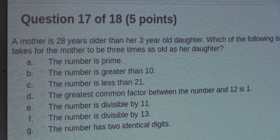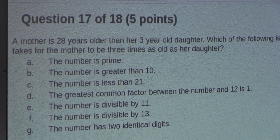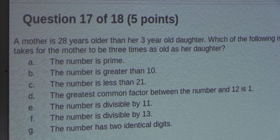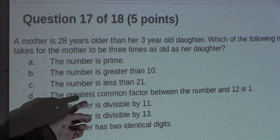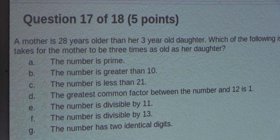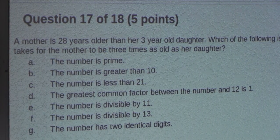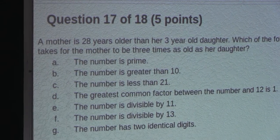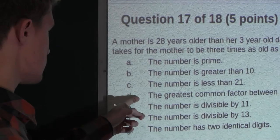Option C, the number is less than 21. Well, that's also true, because 21 is greater than 11. Now, D, the greatest common factor between the number and 12 is 1. Well, yes, 11 and 12 only have that one common factor, which is 1. So that option is true.